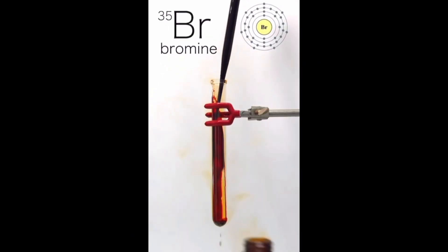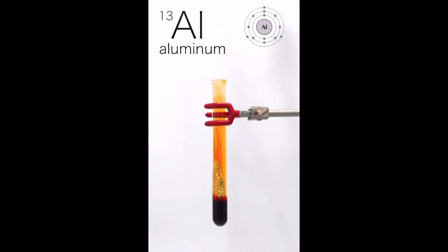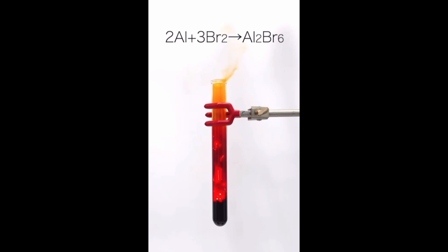What happens when aluminium meets bromine? Let's find out in this explosive reaction. Bromine is a highly reactive liquid. When aluminium, a reactive metal, is added to it, the reaction is instant and exothermic, releasing intense heat and light. That's chemistry in action.